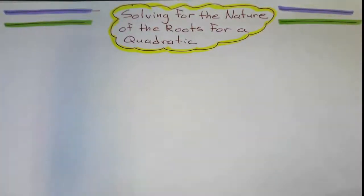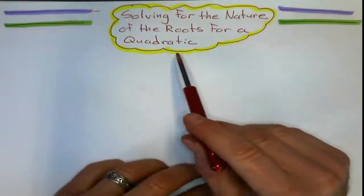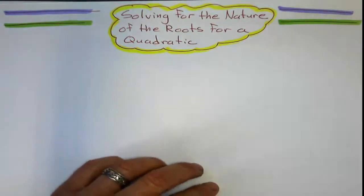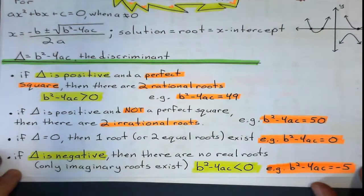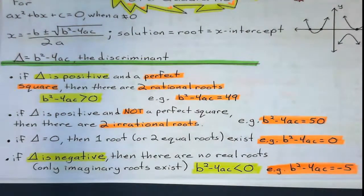Alright, so here's what we're doing this time. Solving for the nature of the roots, just for a quadratic. And the main thing we need to remember are all our notes about the discriminant.